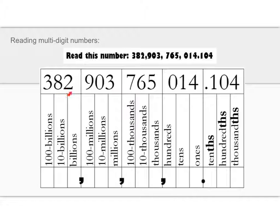Let me say this again. 382 billion, notice we have a comma, 903 million, comma, 765 thousand, comma, 14. Alright.